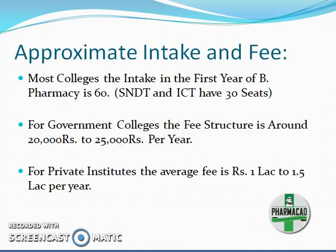After this, we have the approximate intake and the fee structure. Most colleges have an intake of 60 students in the first year of B.Pharmacy. SNDT and ICT have an intake of 30 seats. For government colleges the fee structure is approximately 20 to 25 thousand rupees per year. For private institutes it is an average of around 1 to 1.5 lakhs per year.